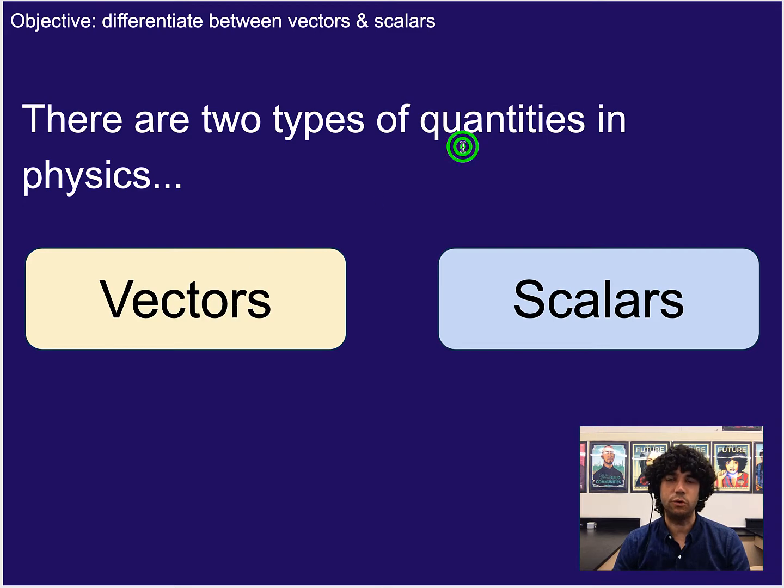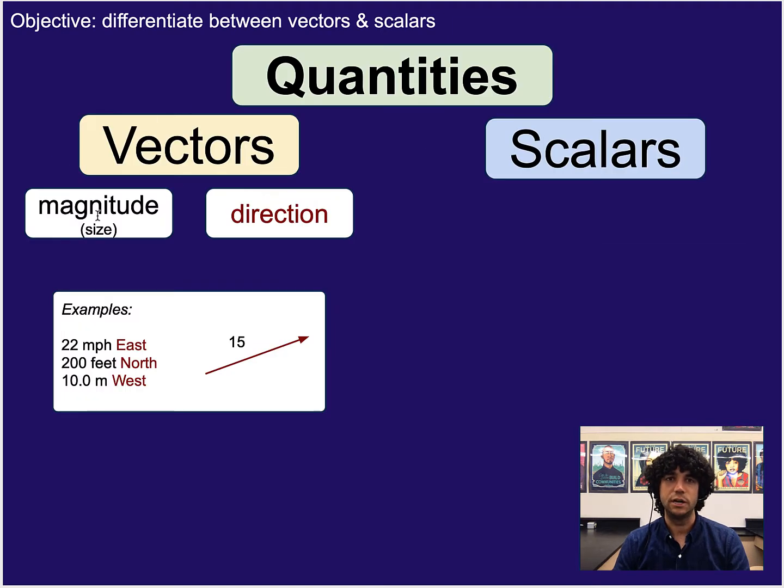So when we say quantity, what we mean are measurements effectively, so a number, usually with units. Vectors are quantities that have both magnitude or size, and a direction.